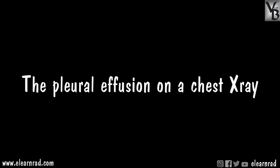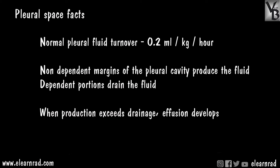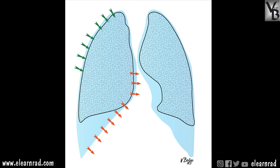A minimal amount of fluid remains in physiological state in the pleural space. The pleural space produces 0.2 ml per kilogram fluid per hour. This fluid is produced by filtration via the parietal pleura in the non-dependent regions, that is the costal pleura. This fluid is then drained via the dependent portions of the pleural cavity, that is the mediastinal and diaphragmatic pleura, into the parietal pleural lymphatic system.